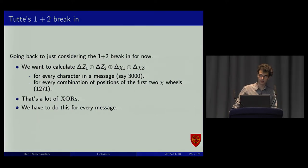They had a problem at the time. Look at this. The messages were quite long. The chi wheels had quite a long rotation period, even just the first two. Look at all the combinations of positions. We ended up doing about 10 million XORs just to do one message. They didn't have computers. So, that's an issue.